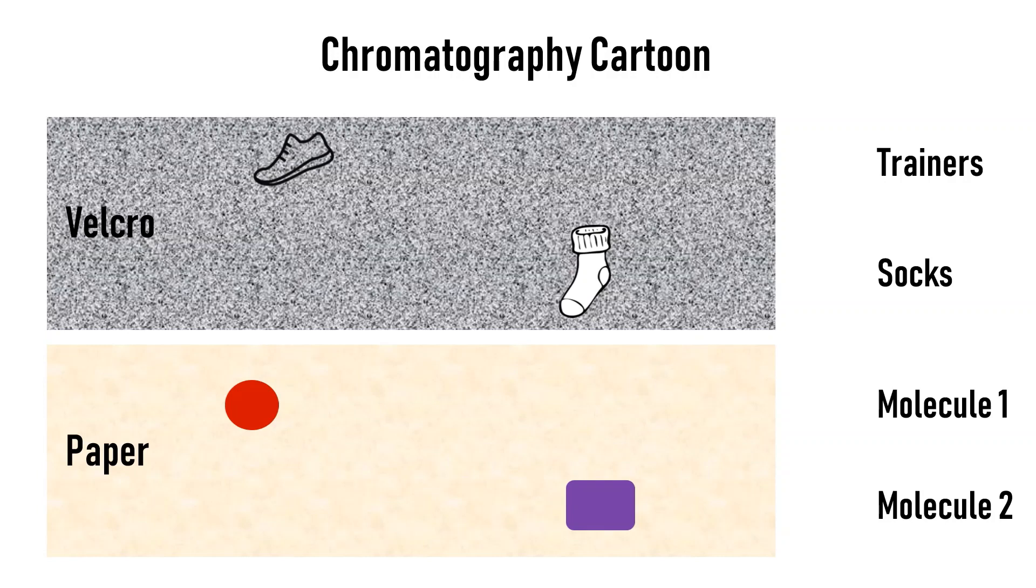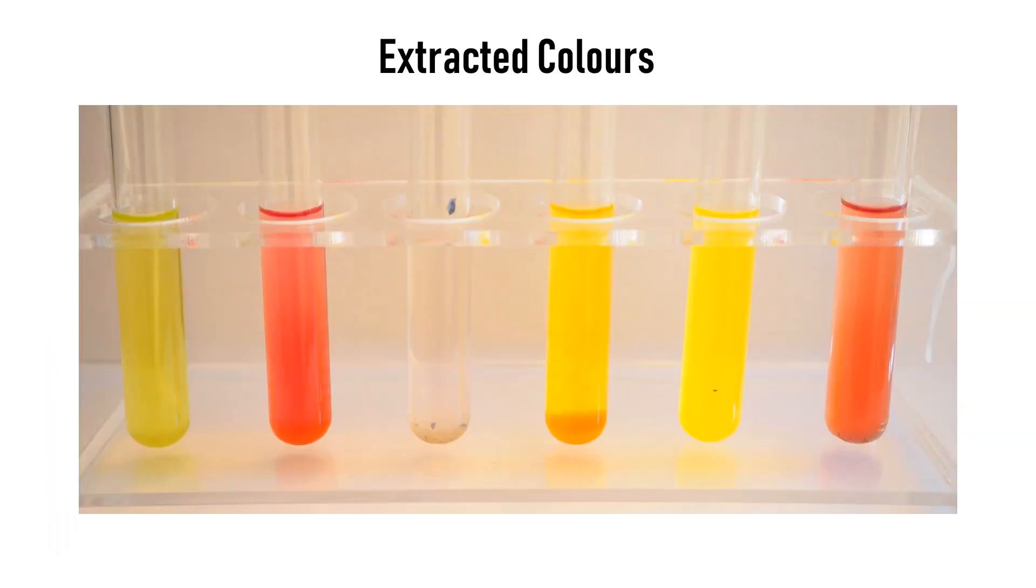And so we separate our molecules and we're going to see if we've got any different interesting chromophores, that means molecules with colour, in any of these samples. Now this technique is a little bit tricky so we're going to go through it together very carefully.